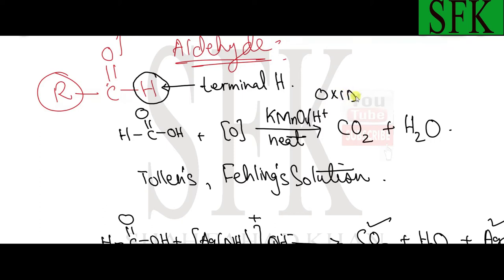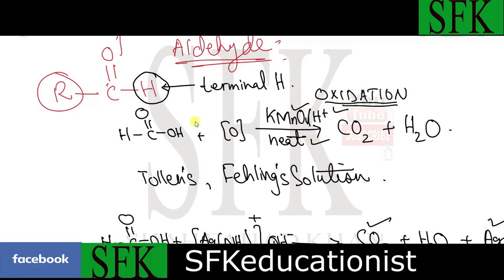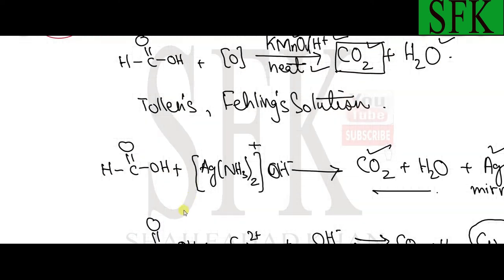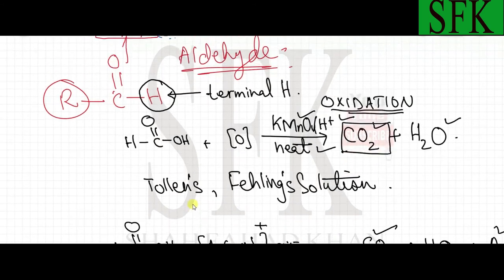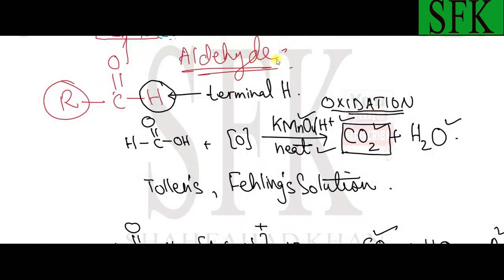The first reaction is the oxidation of methanoic acid. The oxidizing agent used is acidified KMnO4, with heat applied. The oxygen from the oxidizing agent causes methanoic acid to be oxidized to carbon dioxide and water. Since methanoic acid also contains an aldehyde group, it gives a positive result with all tests for aldehydes.